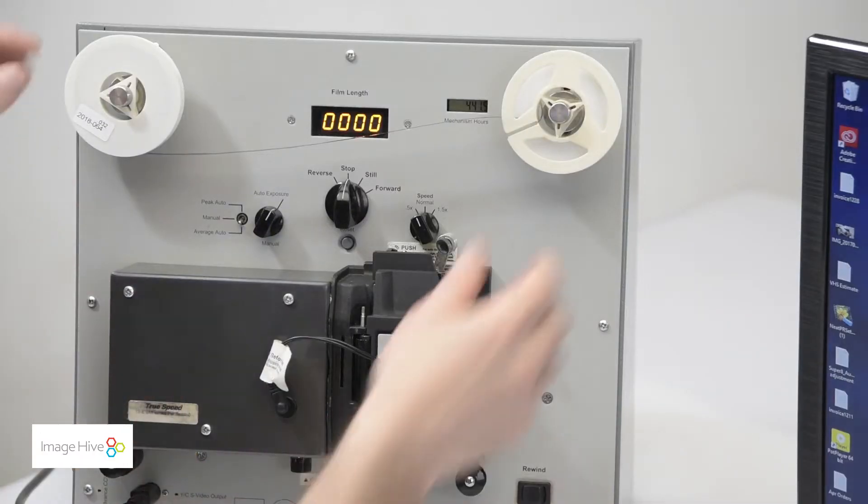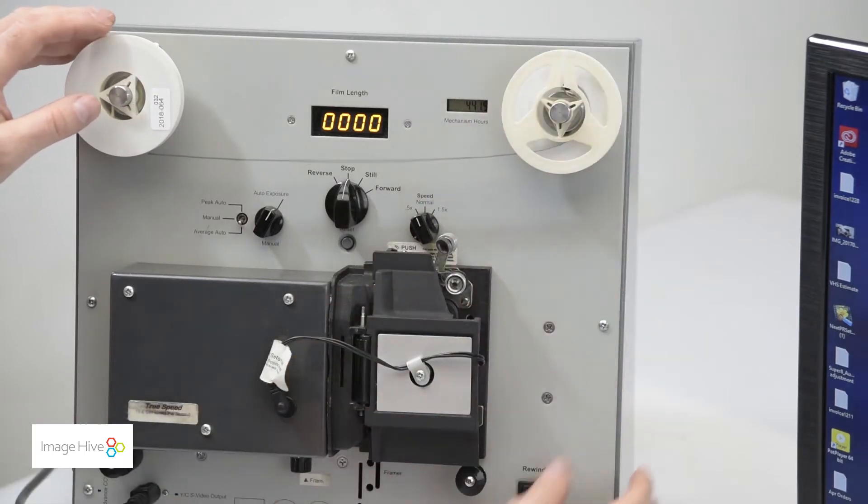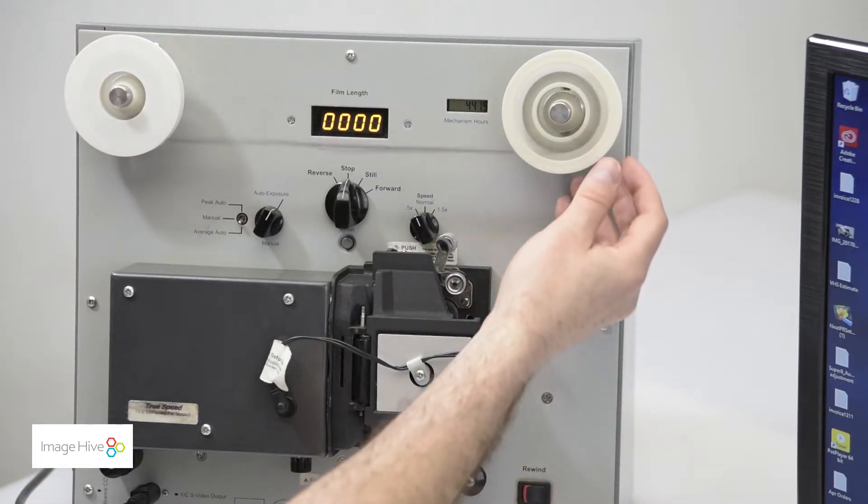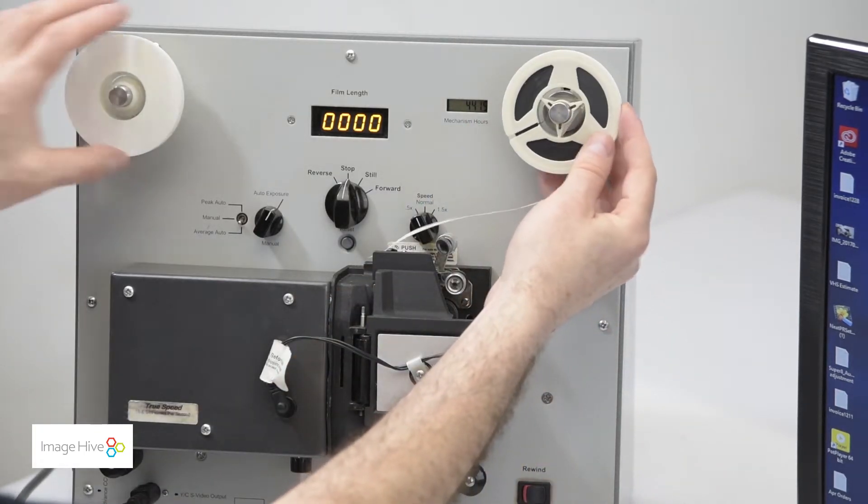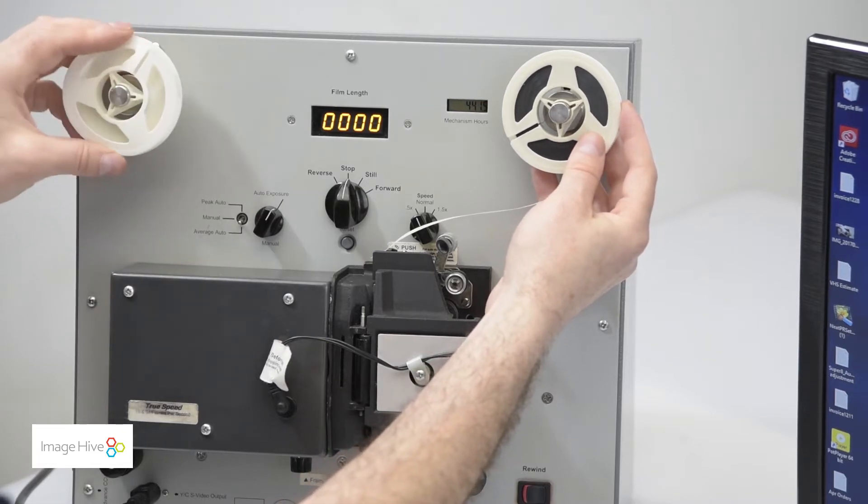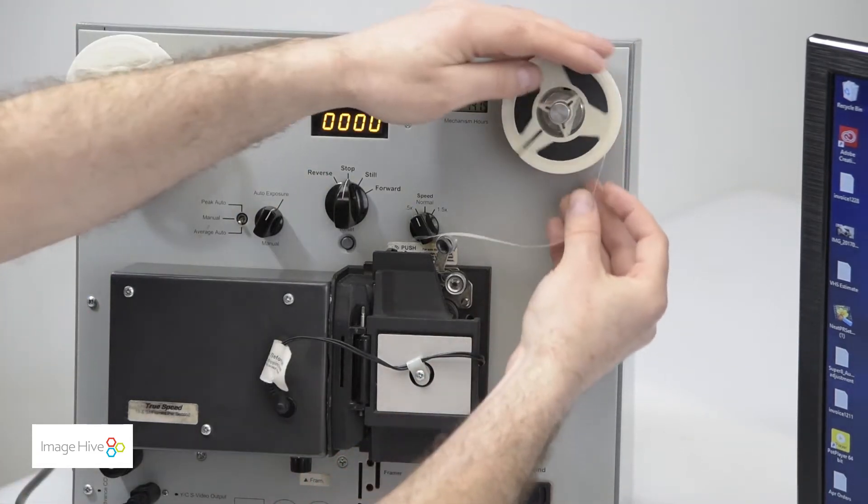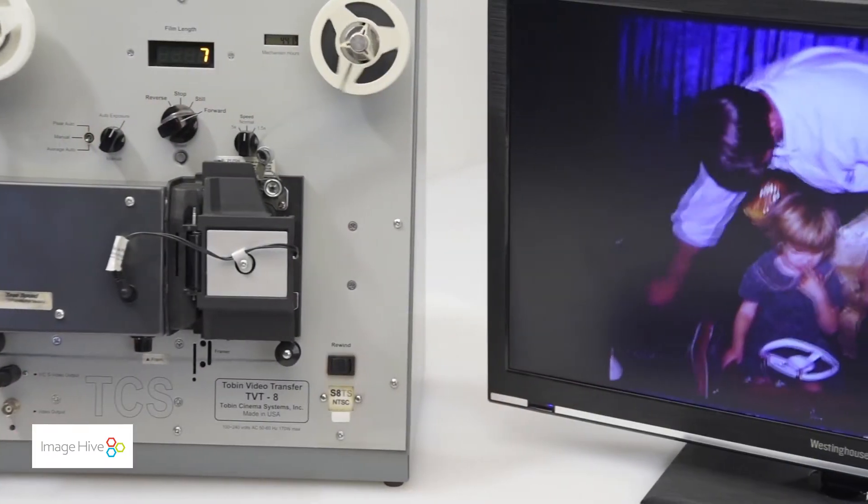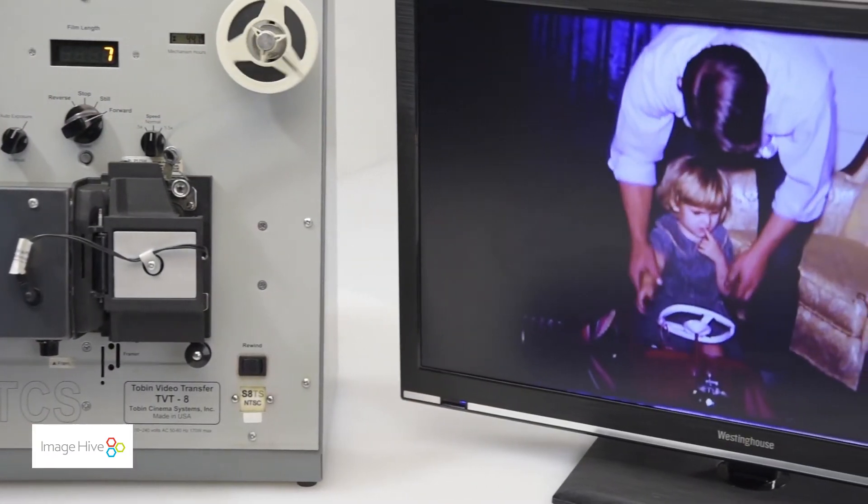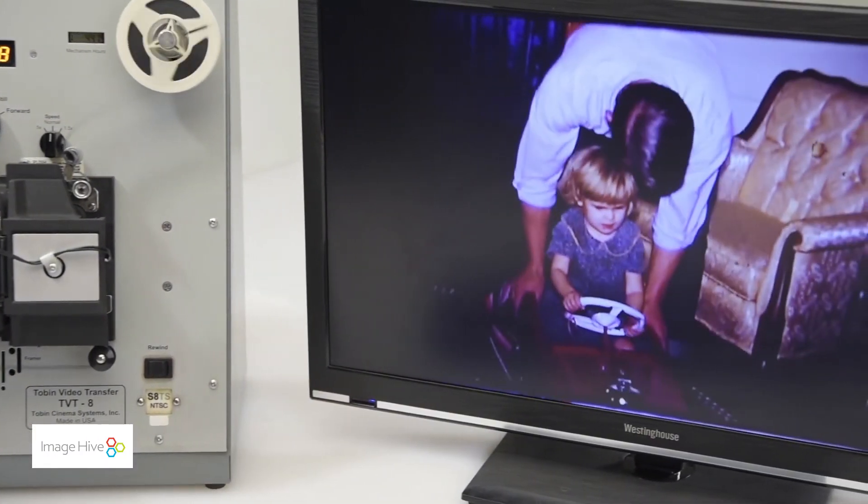Now we can start the transfer process. If you have multiple of each format, you'll need a different machine for Super 8, 8mm, and 16mm. Once everything is set up and the reel is rewound back to its starting point, we can start the transfer. Our machine is connected to a computer so we can monitor the transfer in real time.